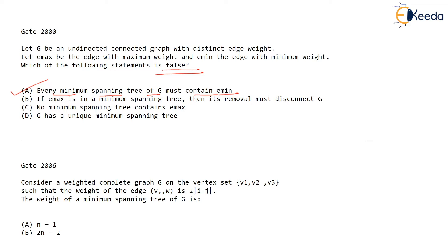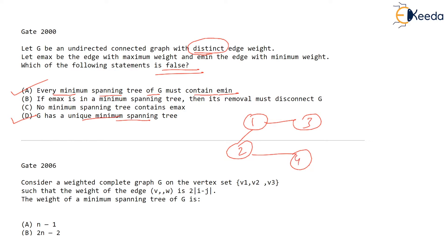Now check option D: graph G has a unique minimum spanning tree. Every edge weight is distinct. Now if every weight is distinct, you will definitely have only a unique spanning tree. Think over it — what if we have four vertices and weights like one, one, two, two? Now the weights are not distinct — but they have said distinct edge weights.